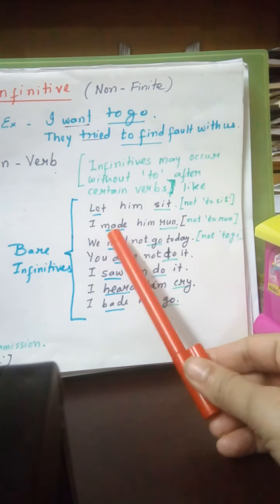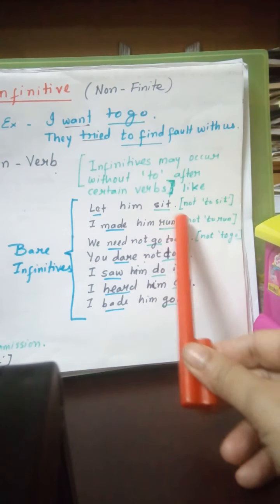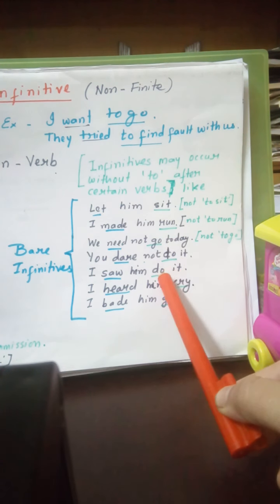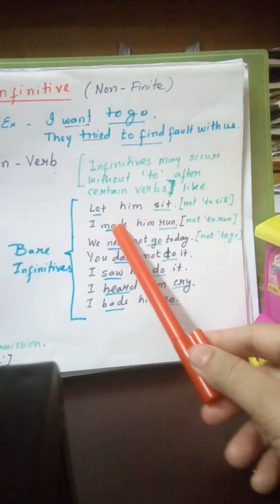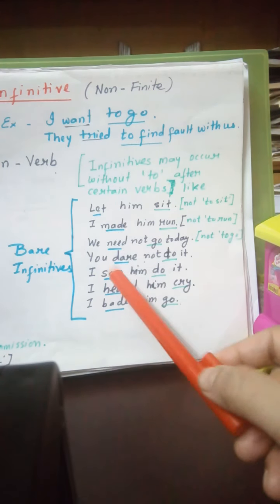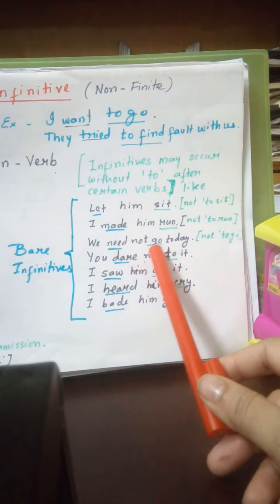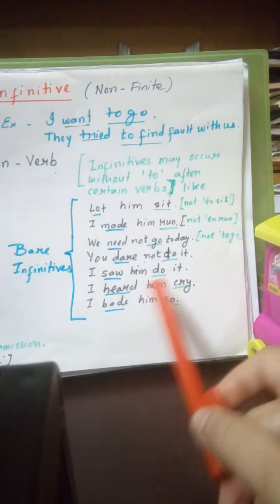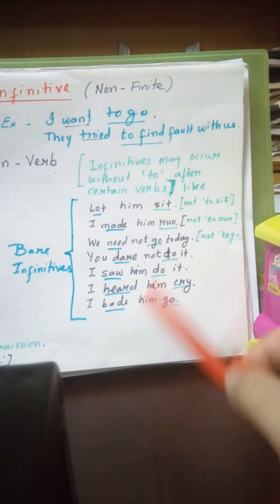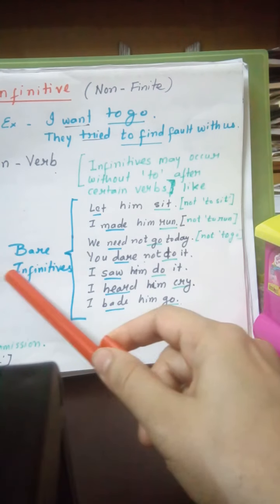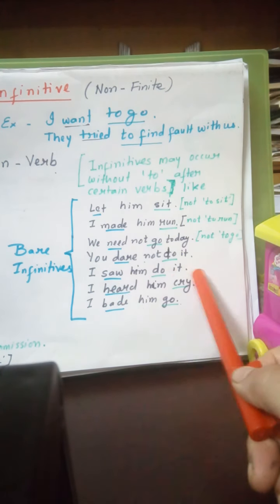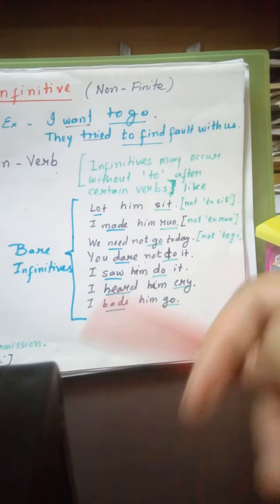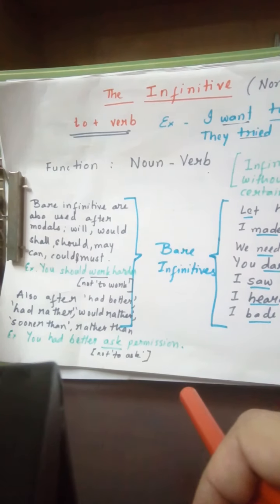'I made him run,' not 'to run' — another bare infinitive. The green underlined words are bare infinitives, while the blue ones are the main verbs. 'We need not go today,' 'you dare not do it,' 'I saw him do it' — not 'to do it.' 'I heard him cry,' 'I bid him go' — not 'to go.' In all these cases, 'to' is absent but they are still infinitives — bare infinitives.